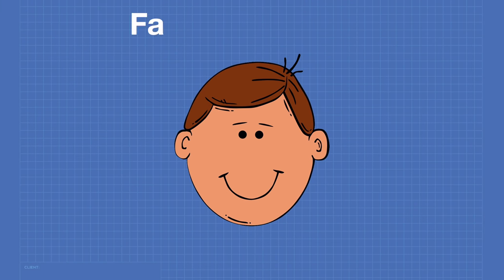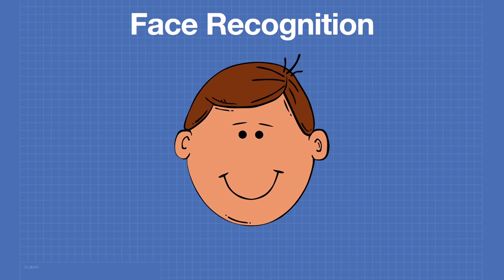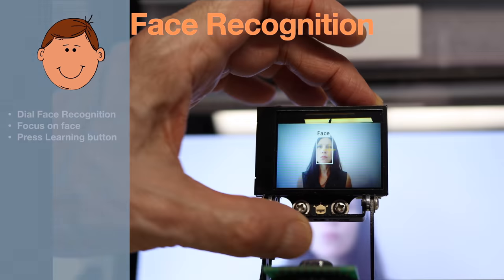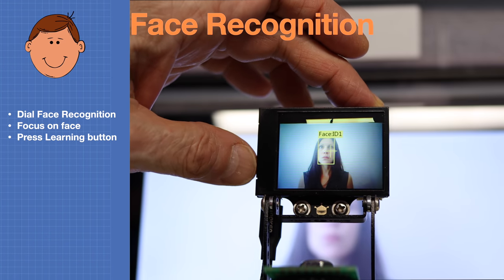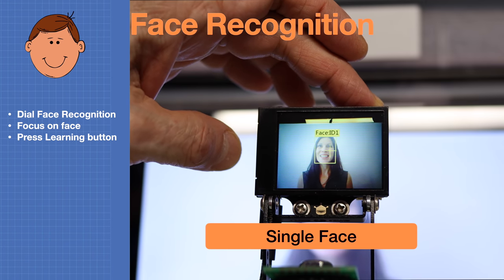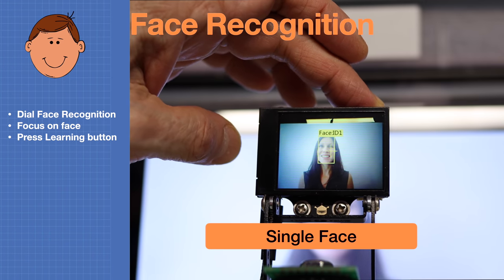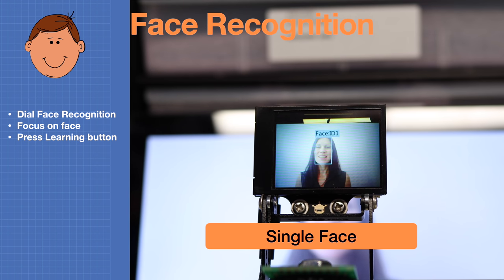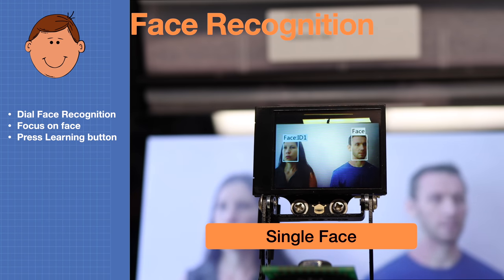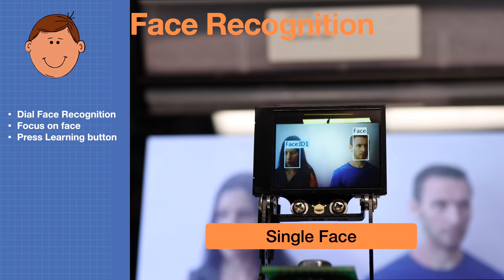In face recognition mode the default is to recognize a single face. Just dial face recognition from the top, focus on the face, and press the learning button. If you hold down the learning button while the face is moving you'll get better results as it learns all the different contours. Once learned, other faces will just come up as 'face,' but in default mode you can only recognize one face.